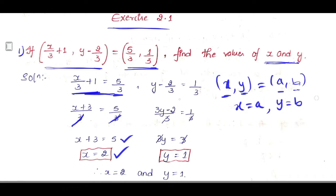Now they have given y - 2/3 = 1/3. Taking LCM, which is 3, in the numerator you get 3y - 2 = 1/3. The 3s cancel, leaving 3y - 2 = 1. Taking -2 to the other side, 3y = 3, and so y = 1. We got that x = 2 and y = 1. I hope you understand this. Now we will see the second problem.